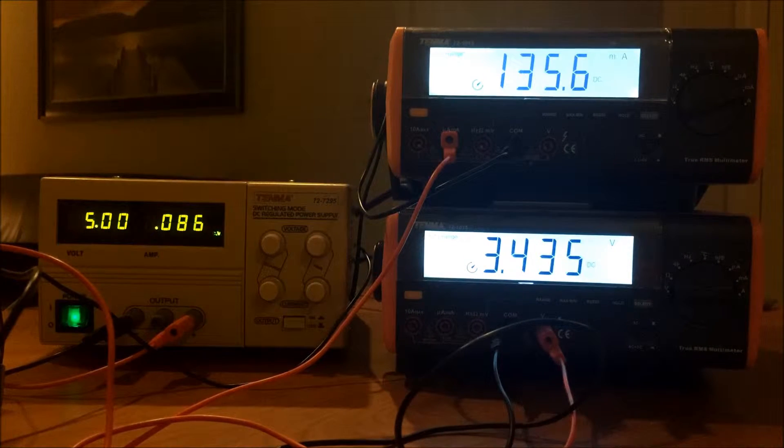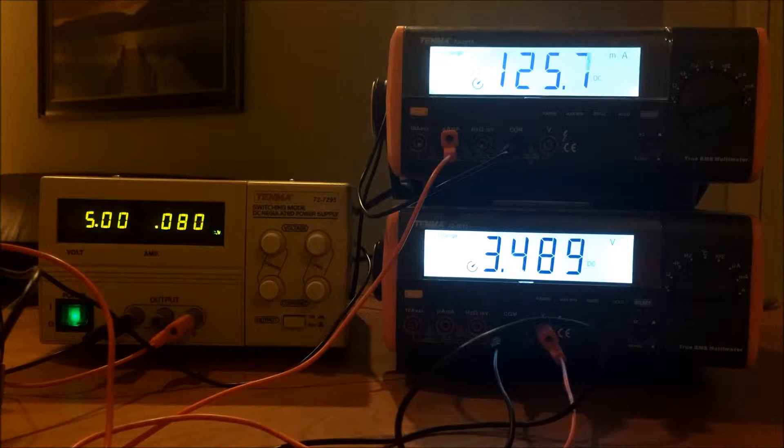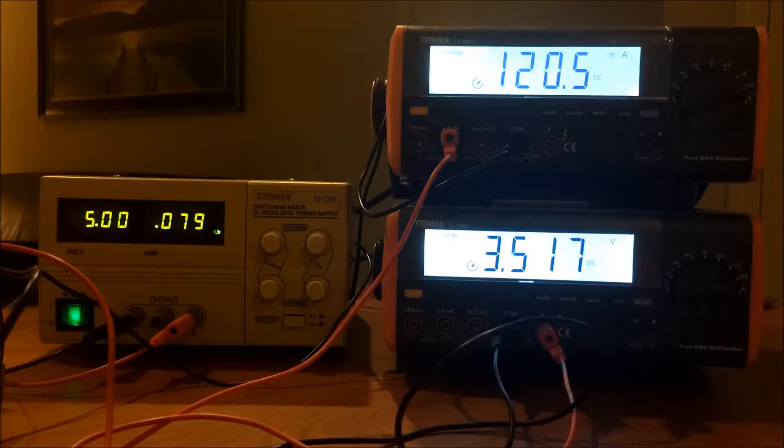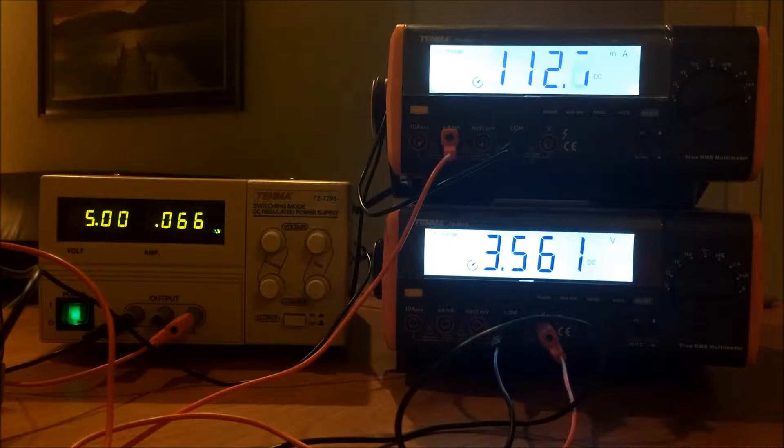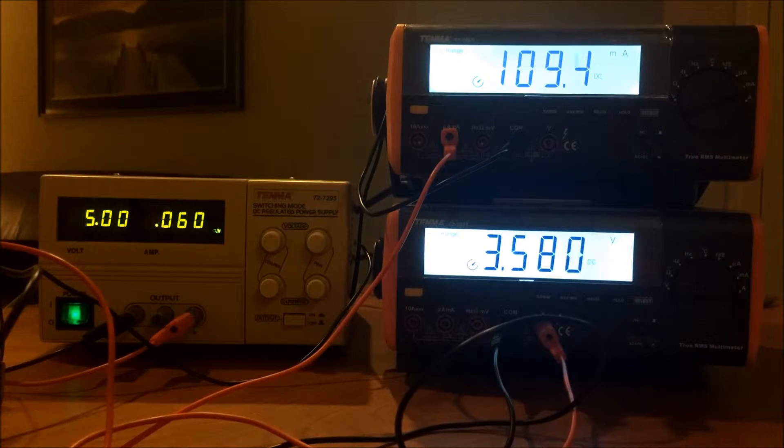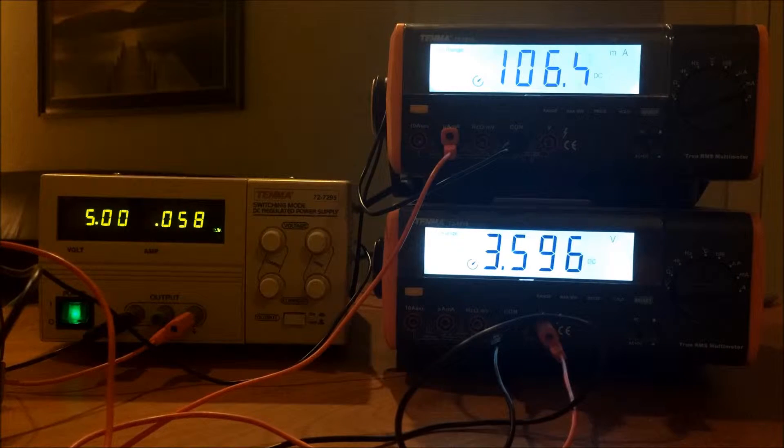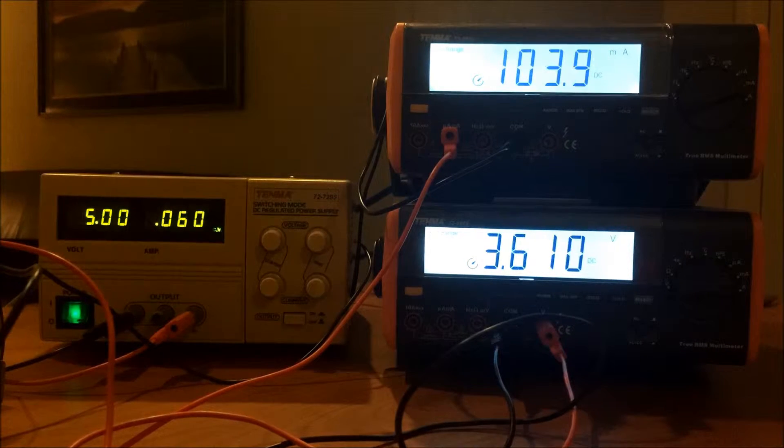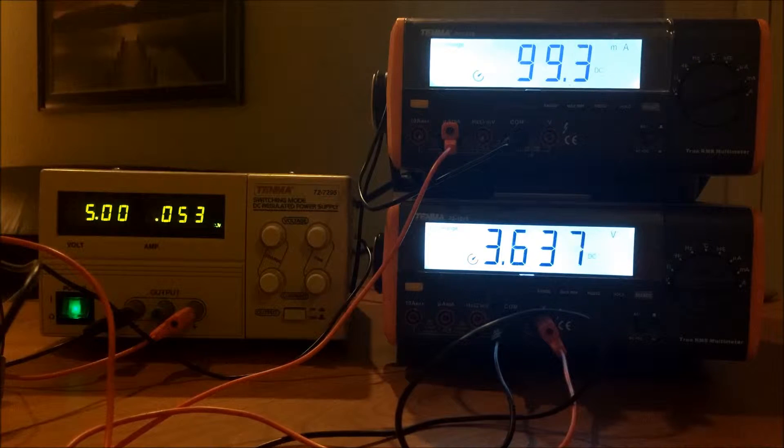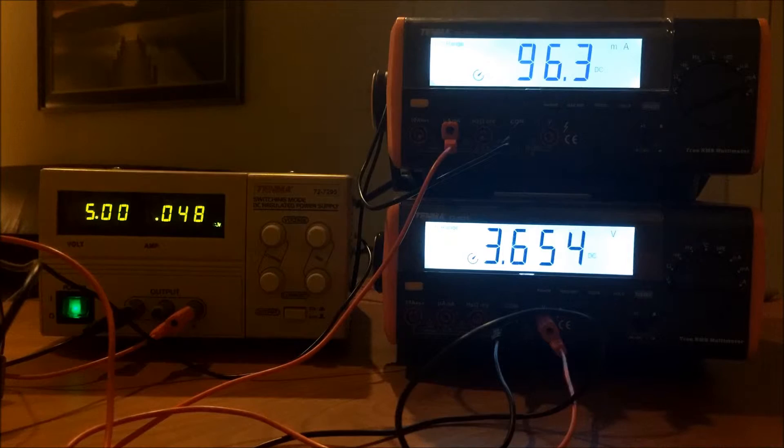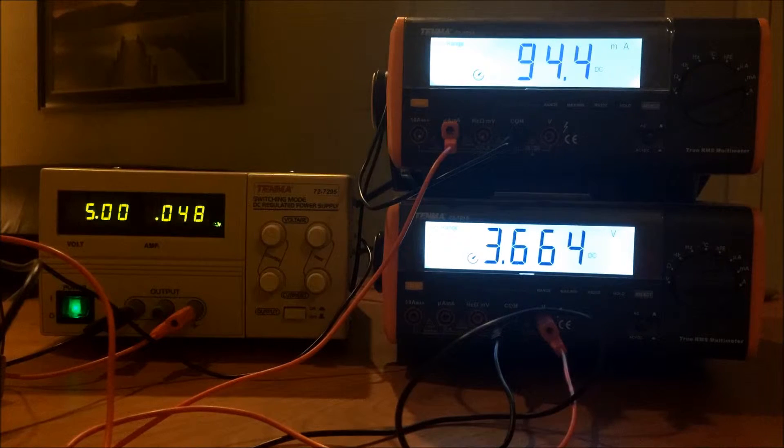This time-lapse displays the lithium-ion battery charging. The top digital multimeter is measuring the current through the battery, and the bottom digital multimeter shows the voltage across the battery. You can see that as the battery charges, the voltage across the positive and negative terminals increases. Also, as the battery charges, the rate that the current flows into the battery decreases so that the battery does not get overcharged.